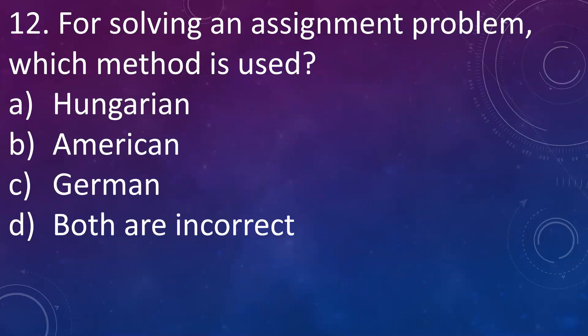Next question: for solving an assignment problem, which method is used? A. Hungarian, B. American, C. German, D. Both are incorrect. Answer is Hungarian — American and German are incorrect. The Hungarian method is used to solve the assignment problem. An assignment problem is about task assignment — for example, if there are four people and four tasks, which task should be assigned to which person depending upon efficiencies. This can be calculated using the Hungarian method.